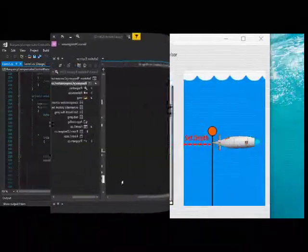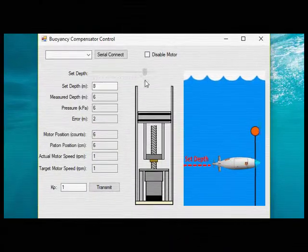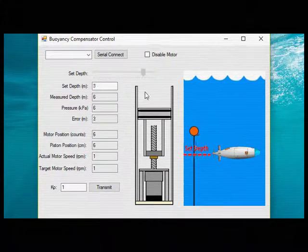With the latest in color graphics simulation technology, operators can set a target depth, change gain, and view sensor feedback.